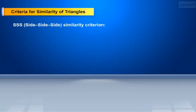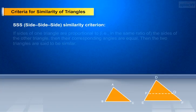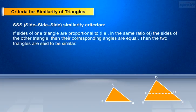Let us discuss about SSS — that is, Side-Side-Side — similarity theorem or criteria. If sides of one triangle are proportional to, that is in the same ratio as, the sides of the other triangle, then their corresponding angles are equal.